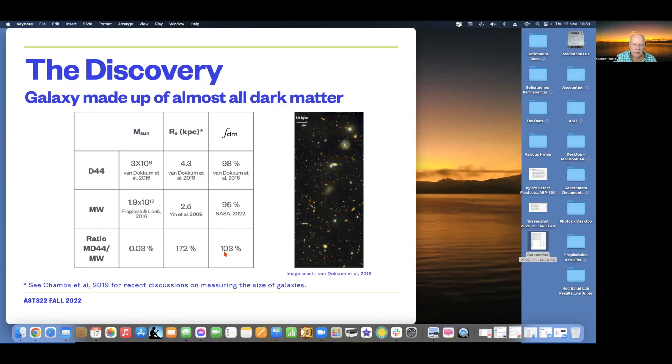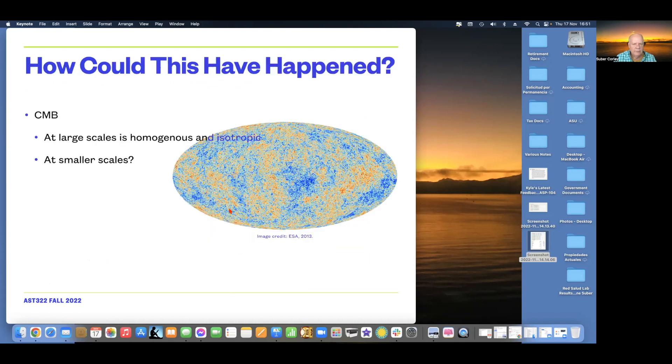And roughly, so when you look at it that way, my original surprise at the 98% for Dragonfly 44 was even, I was even more surprised by the Milky Way number at 95%. So, how can it be that there's dark matter like this everywhere we look, apparently, and apparently in very large supply?